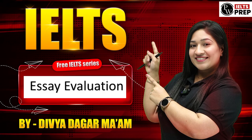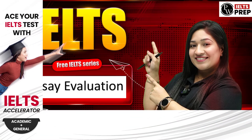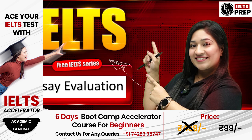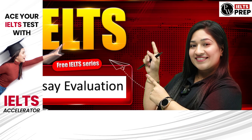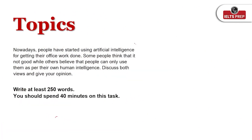Today we are going to evaluate one of the writings by our students. The topic he has written on is 'Discuss both views and give your opinion.' The topic says people have started using artificial intelligence for getting their office work done. Some people think this is not good, while others believe that people can only use them as per their own human intelligence.